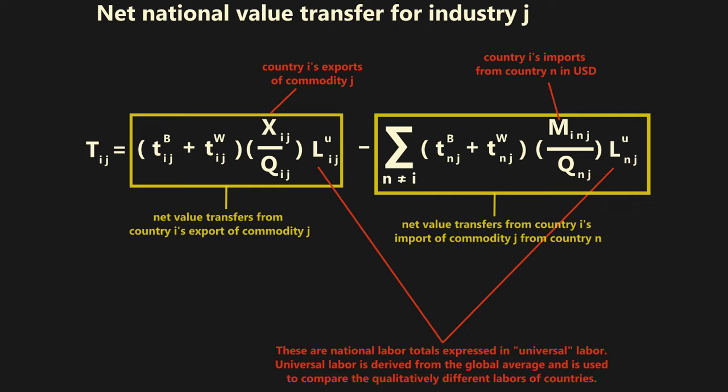Ricci then combines both the transfers between industries and between countries into a single expression that calculates value transfers for each country's industries. This is the base model that Ricci develops, though he later goes on to consider the effects of trade in global value chains. Given the importance of outsourcing and offshoring in the neoliberal era, not accounting for the distribution of production processes across globally linked nodes would result in an incomplete picture. For those interested in the math, Ricci's book provides ample discussion of the models.